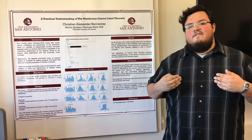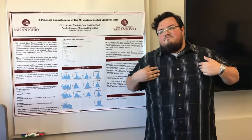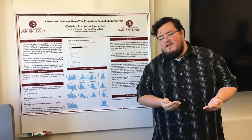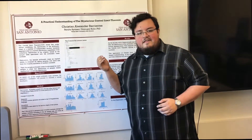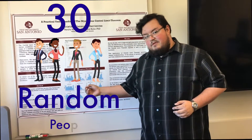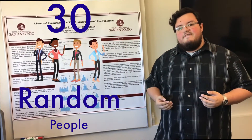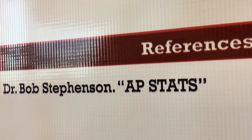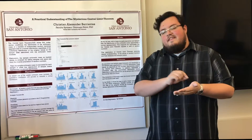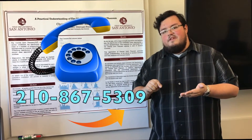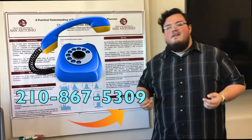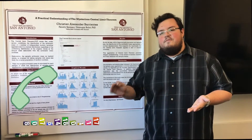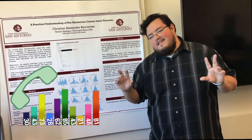I was looking to find another application of the central limit theorem to see if it could apply to random numbers. So I did a sampling of 30 random people using a method I found from a project by Dr. Bob Stephenson. What he did was get the last four digits of people's phone numbers and use those as random numbers.